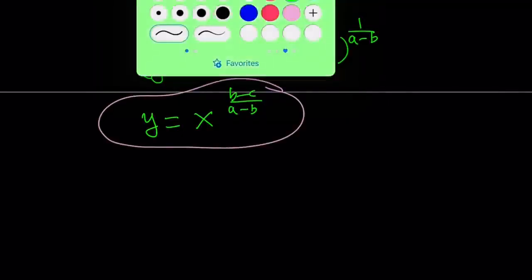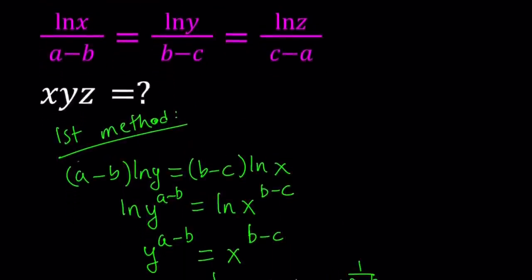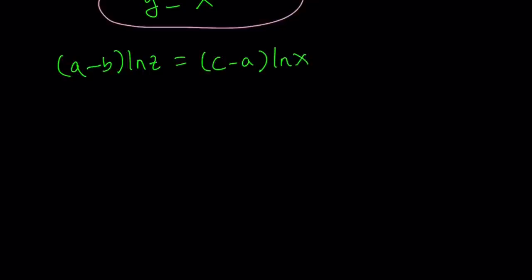And then let's proceed with the second part. Now the first method, the second part. Now we're going to go ahead and take these two together, x and z. And that's going to give us the following. We're going to write this as a minus b times ln z equals c minus a times ln x. And from here, we get ln z to the power a minus b equals ln x to the power c minus a. And z to the power a minus b becomes x to the power c minus a.